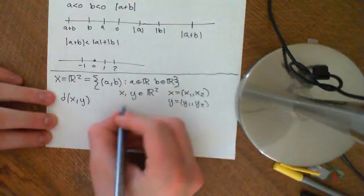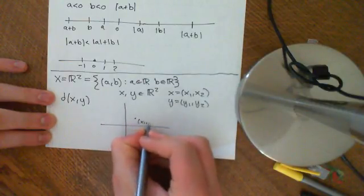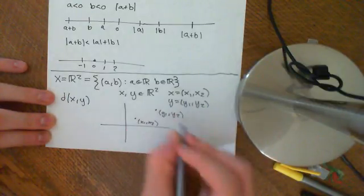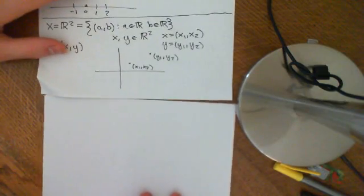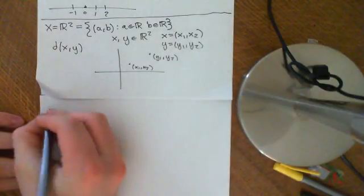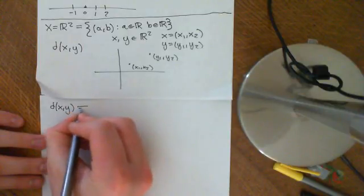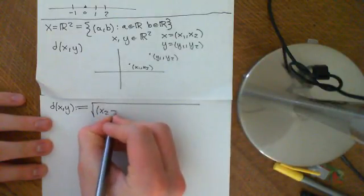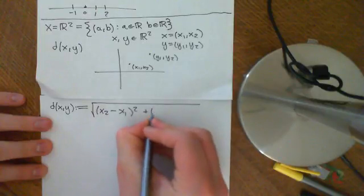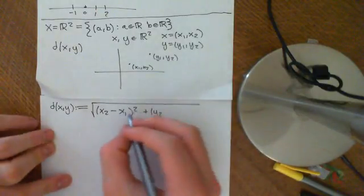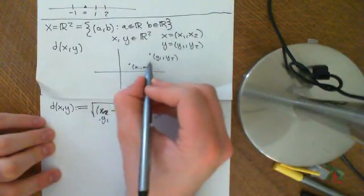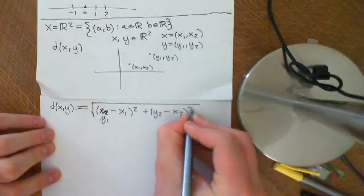OK, and the distance between these two points, X and Y, so if you want a picture, we've got X over here, which is X₁ and X₂, and we've got Y over here, which is Y₁ and Y₂. OK, so the distance between X and Y, I'm going to define to be equal to the square root of (Y₁ - X₁)² plus (Y₂ - X₂)². So we take the distance, the difference in the first component, and then we take the difference in the second component here, and we square that.